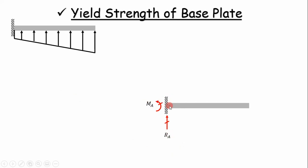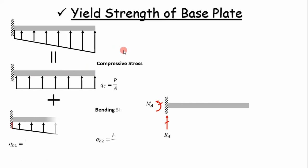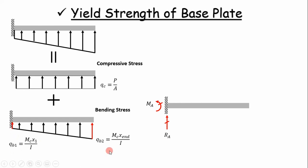Applying superposition, we break this down into a uniform load where the line load equals the compressive force over the area — in this case a one-inch by length-of-beam area — and another load distribution created by the bending stress, with line loads calculated at each point. To get the equivalent force system, it's simply the area under the curve. We have three areas: A1 is the uniform load area, A2 is the triangular load — one half base times height, where height is the difference in line loads — and A3 is another uniform load area.